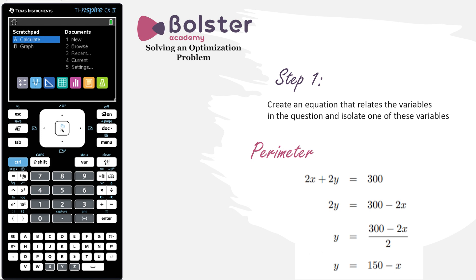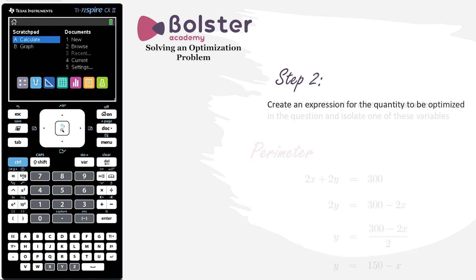Moving on to step 2: we want to create an expression for the quantity to be optimized. What are we trying to optimize? We're trying to optimize the area. Area is length times width, so area = x times y. Simple as that — step 2 is done.